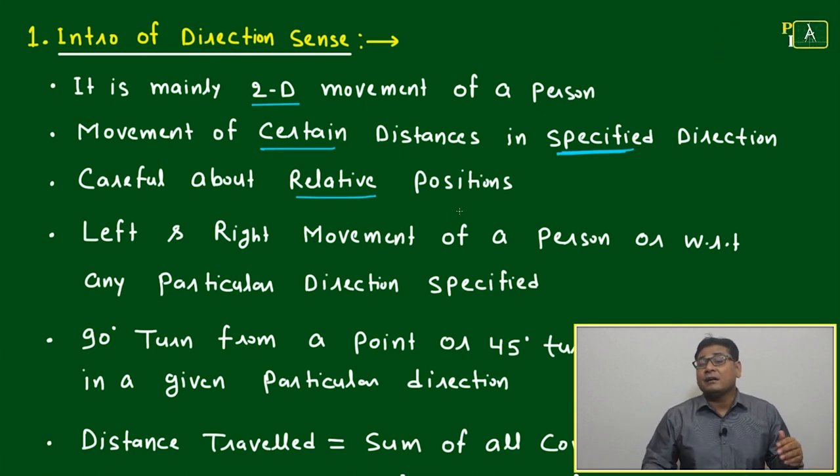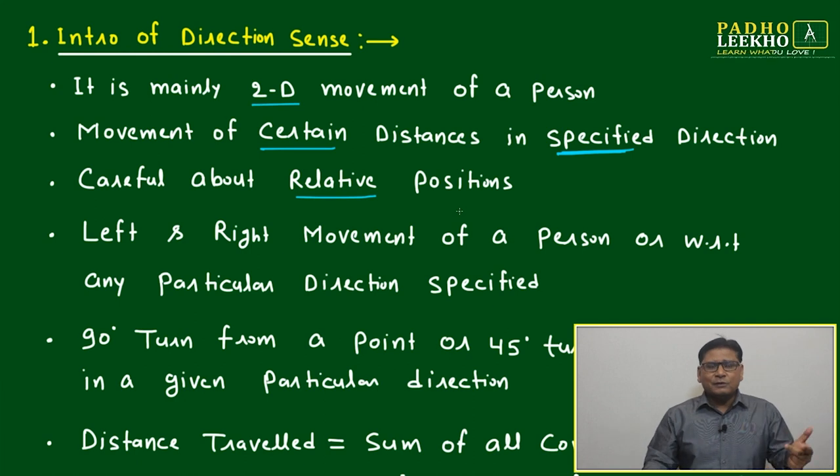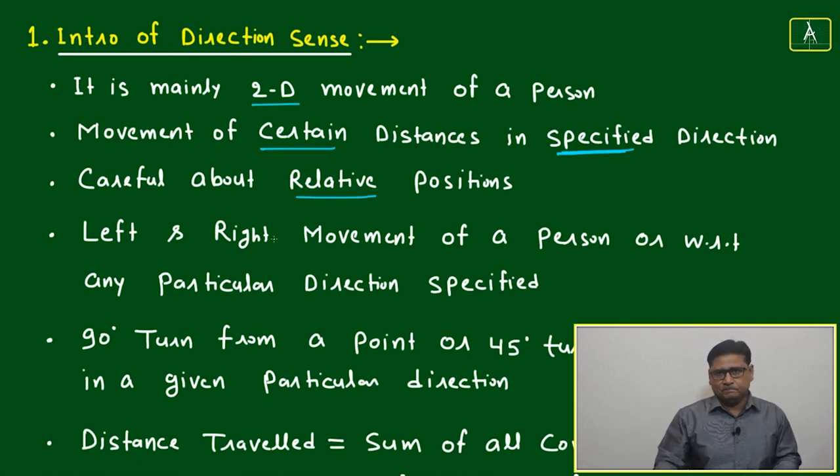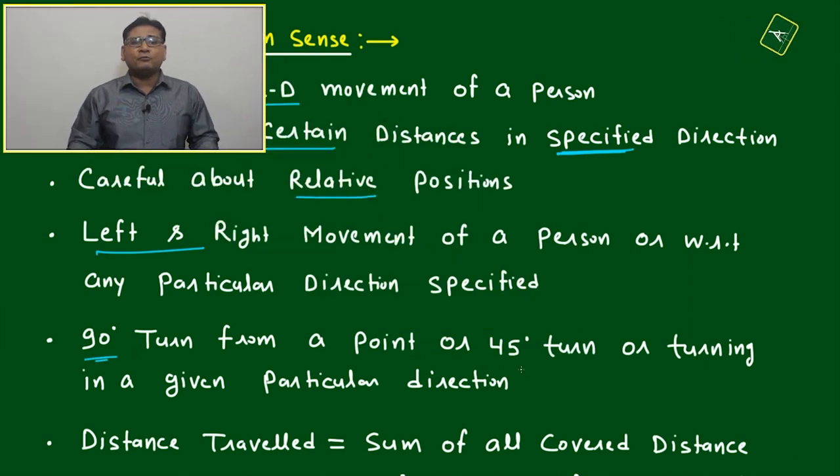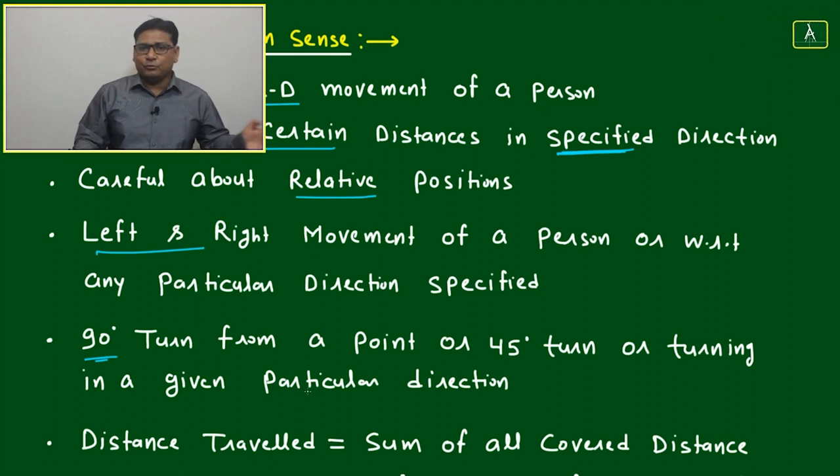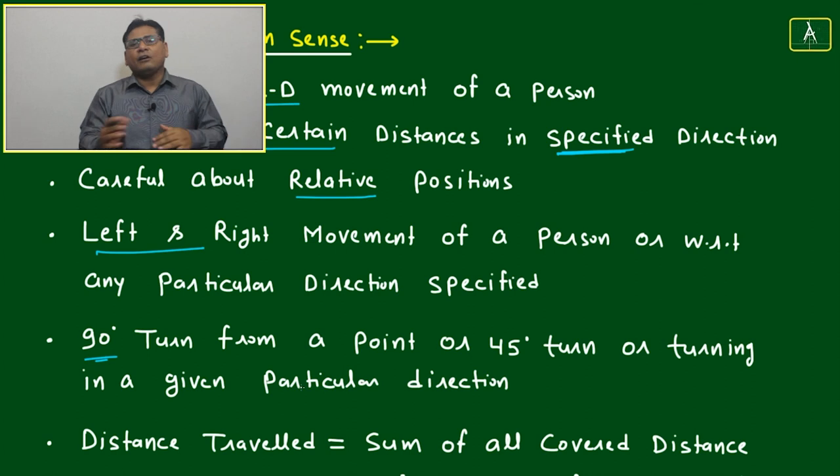One confusion and the answer will be totally different. Once you have taken something wrong in place of left or right, the answer will be totally different. 90-degree turn from a point, or 45-degree turn, or sometimes they will use clockwise or anti-clockwise. Be careful - clockwise turning, anti-clockwise turning, then again 90-degree turning, or a combination of all these things.